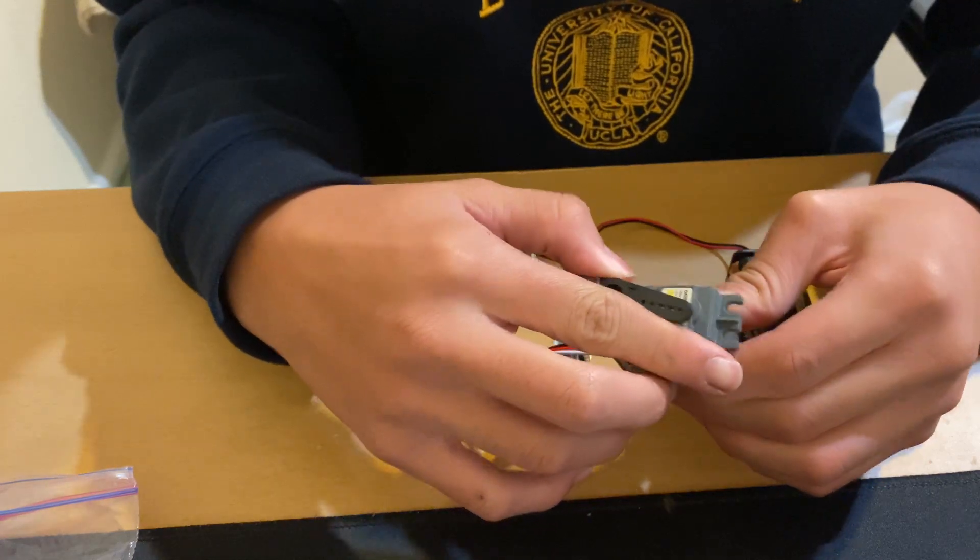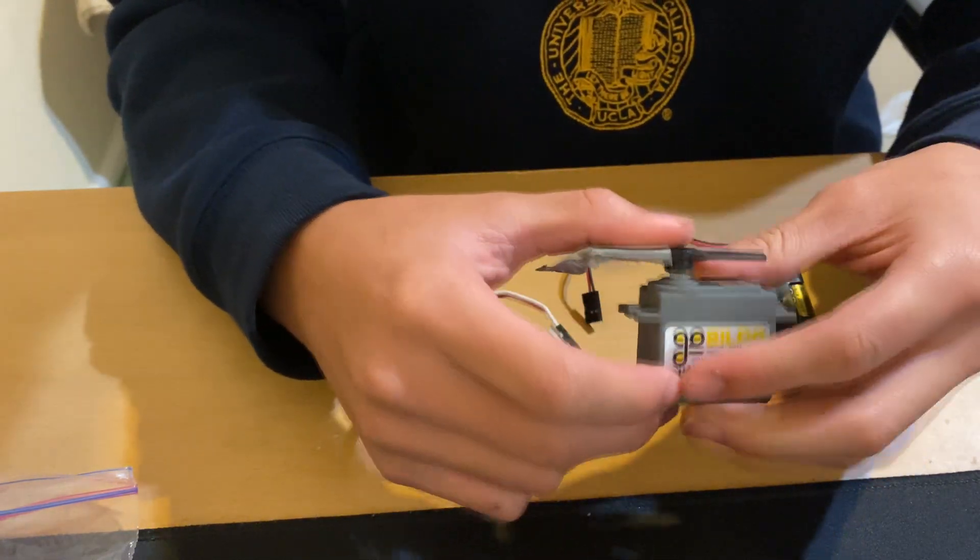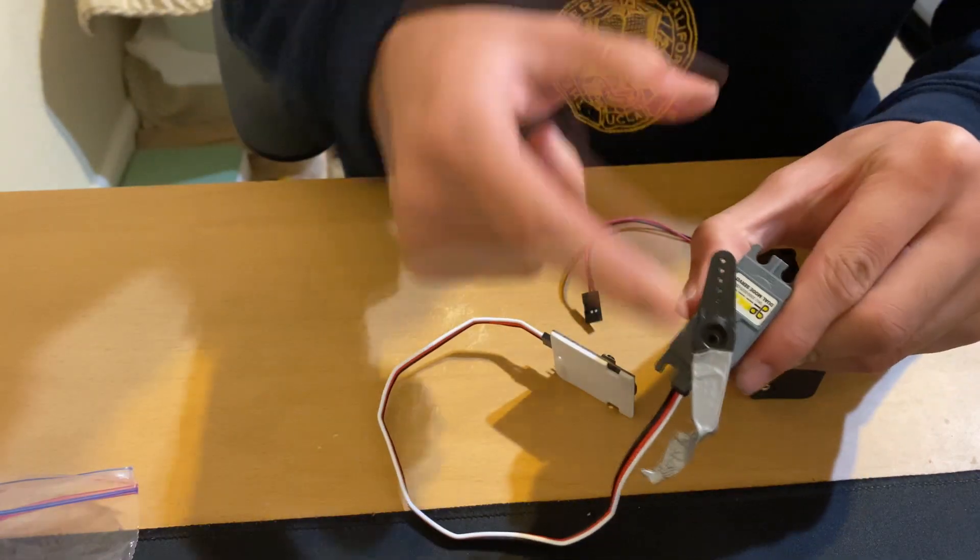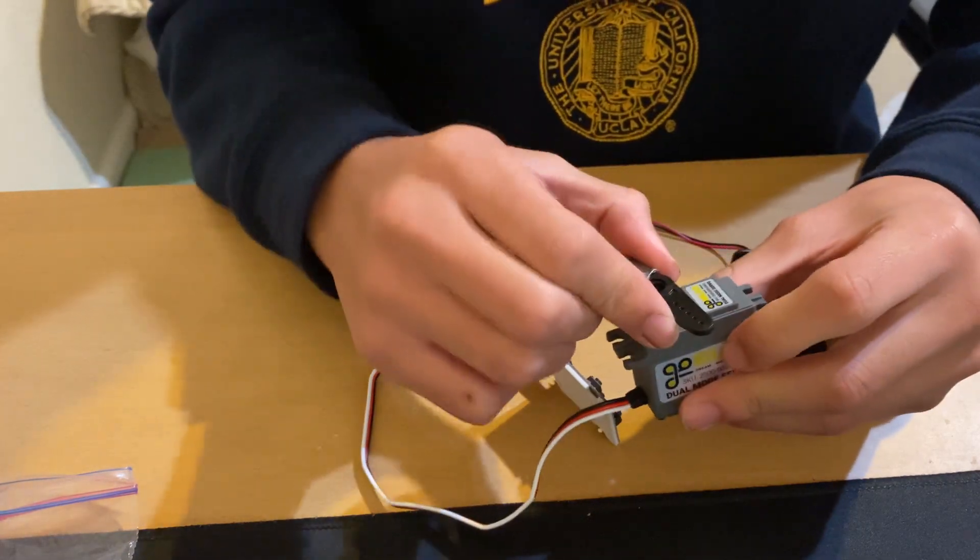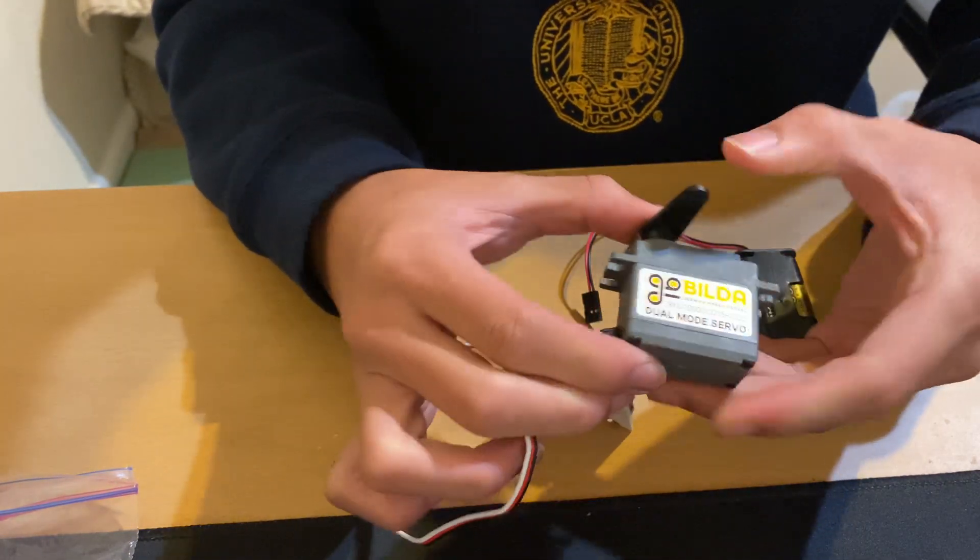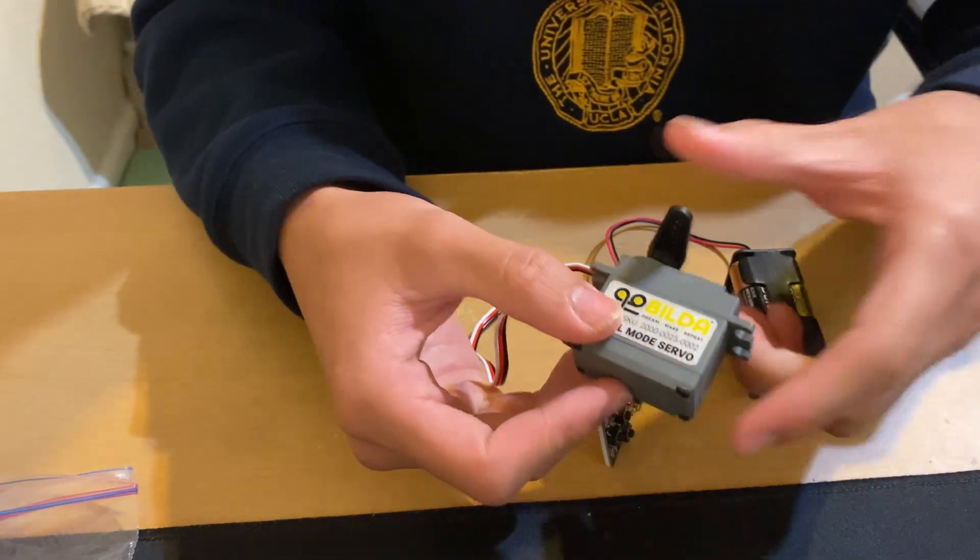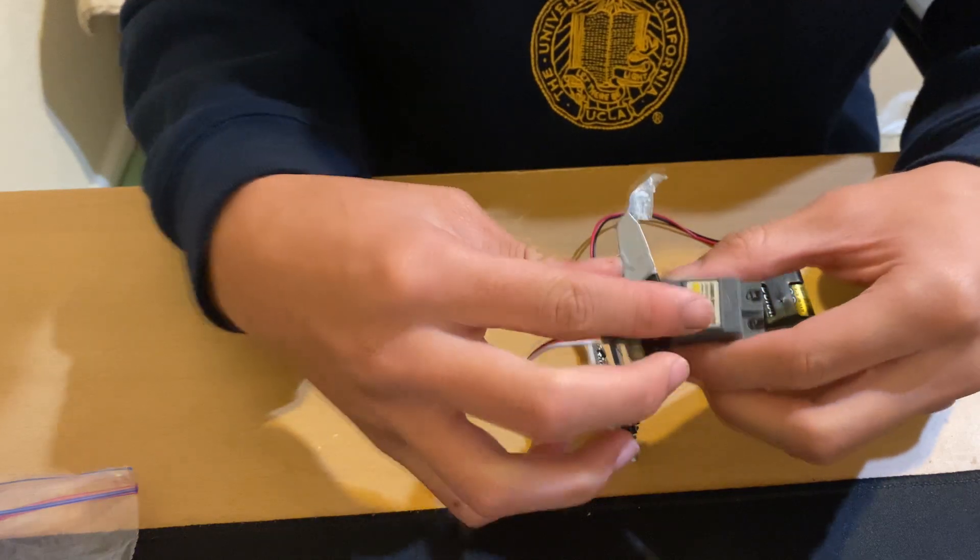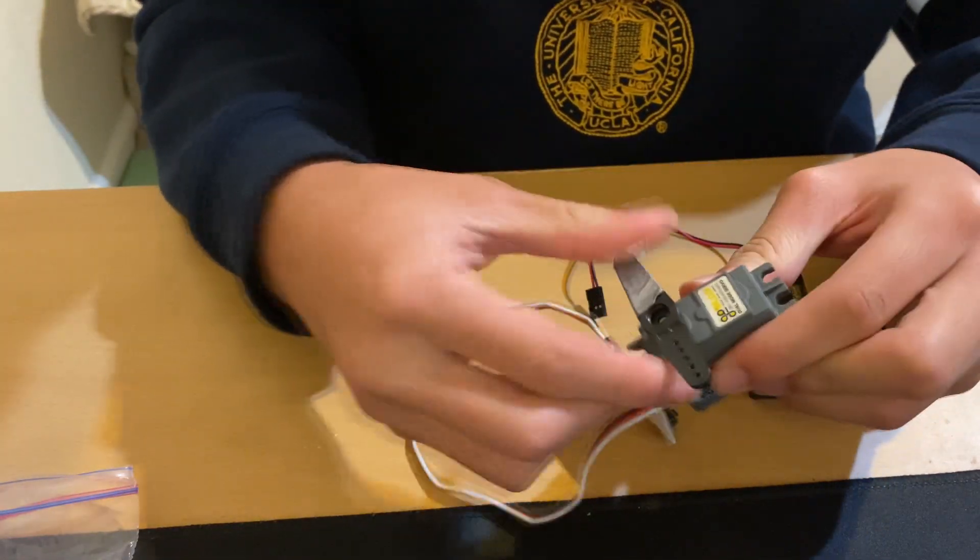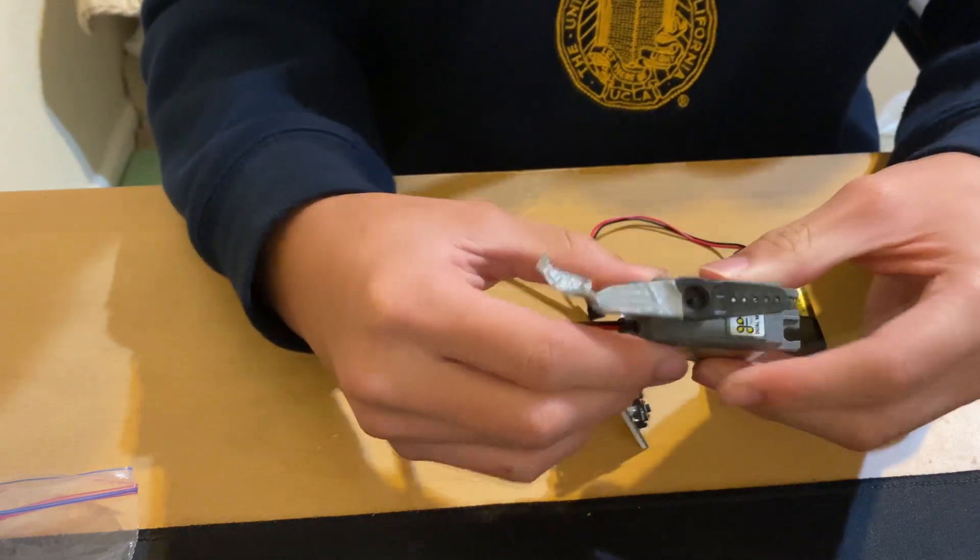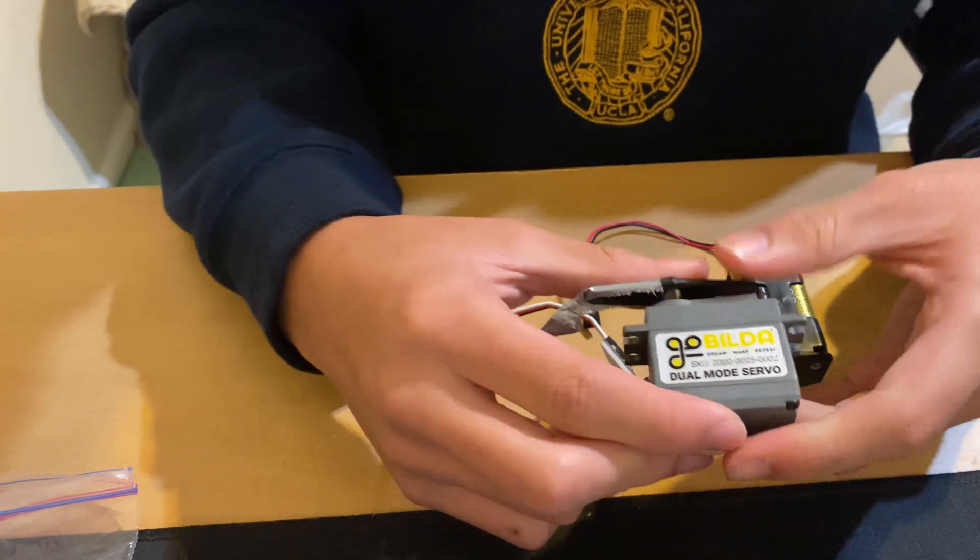However, there is also a different alternative which is called servo. Servo is basically able to set certain positions. However, a servo does not have a full range of 360 degrees. Most servos like this one only have about 300 degrees, so there's a certain 60 degrees that the servo cannot travel. However, there are some very expensive good alternatives to servos. If you do have a budget, you can get pretty close to 360 degrees.